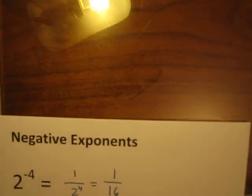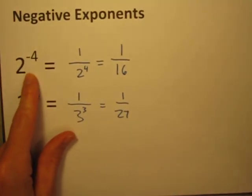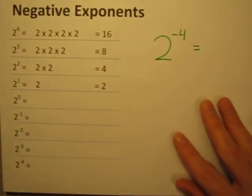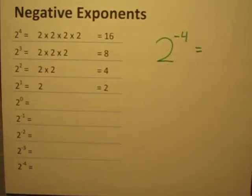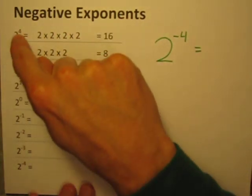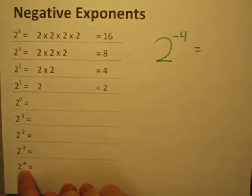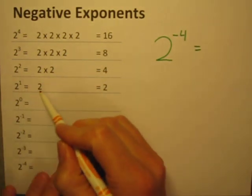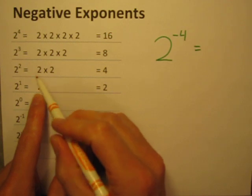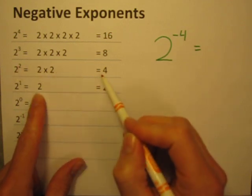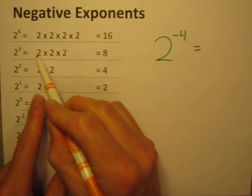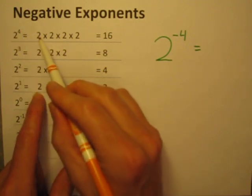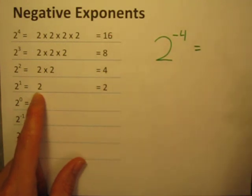So if I bring over this one here and try to illustrate 2 to the negative 4th power, we can start with a little table. Here are a bunch of powers of 2, from 2 to the 4th power all the way down to 2 to the negative 4th power. 2 to the 1st power is just 2. 2 to the 2nd power is 2 times 2, which is 4. 2 to the 3rd power is 2 times 2 times 2. And 2 to the 4th power is 2 times 2 times 2 times 2, which is 16.